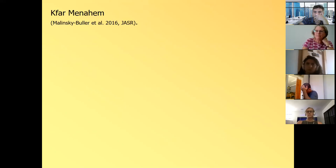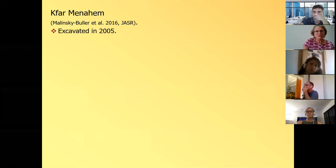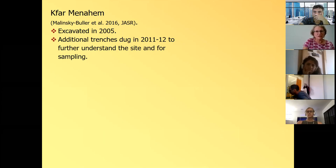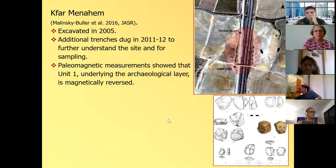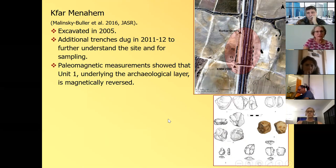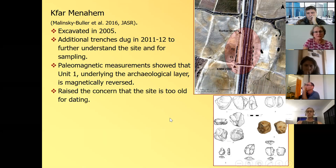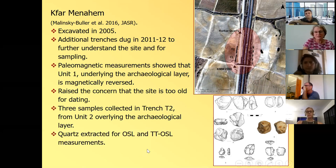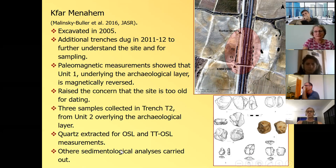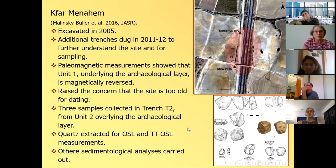And so the age range of the site is 550 to 430,000 years. And what they see in the trench is repeated cycles of infill and down cutting, probably resulting from the proximity to the stream. And this places the ages in the middle part of the Lower Paleolithic. The second site, Kfar Menahem, it's a little bit north of the previous site, situated in a very similar geological position, excavated in 2005. Additional trenches dug in 2011-12 to further understand the site. And this is Highway 6. And this is the 2005 excavation. And here are the trenches. There was a quarry here, and that's where they found a lot of the artifacts. Some of the artifacts are shown here. Paleomagnetic measurements show that Unit 1, which underlies the archaeological layer, is magnetically reversed.